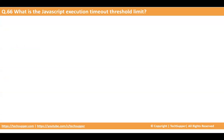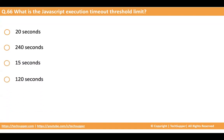The next question is: what is the JavaScript execution timeout threshold limit? When you use JavaScript as a library and call a function in the mapper, how much time will it take before it times out? The options are 20 seconds, 240 seconds, 15 seconds, and 120 seconds. The answer is 15 seconds — if your JavaScript function does not complete within 15 seconds, you will receive a timeout error.